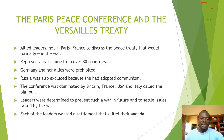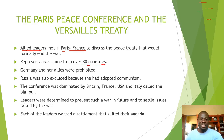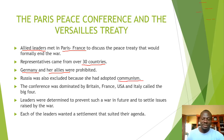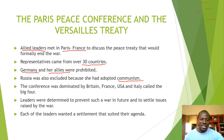The Allied leaders met in Paris, France. The reason for the meeting was to formalize the end of the war. About 30 countries sent representatives, but Germany and all other defeated powers were not allowed to attend. Russia was also prohibited because of communism — the Western leaders didn't want the spread of communism.